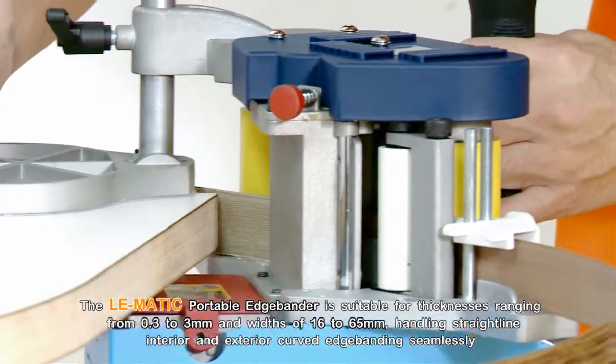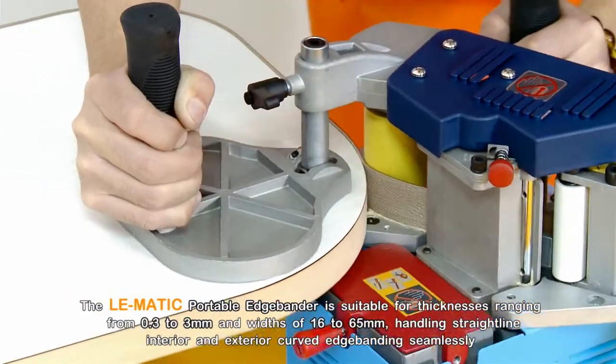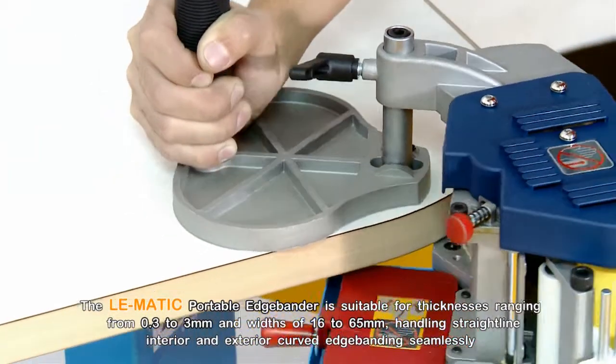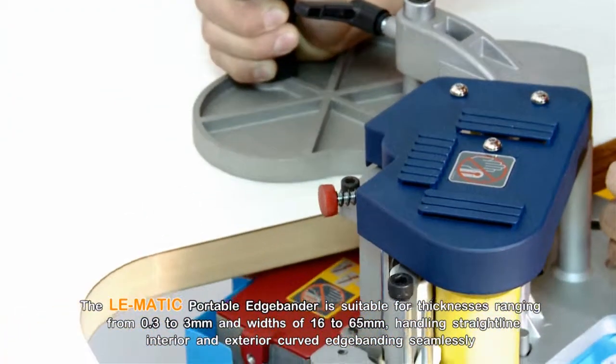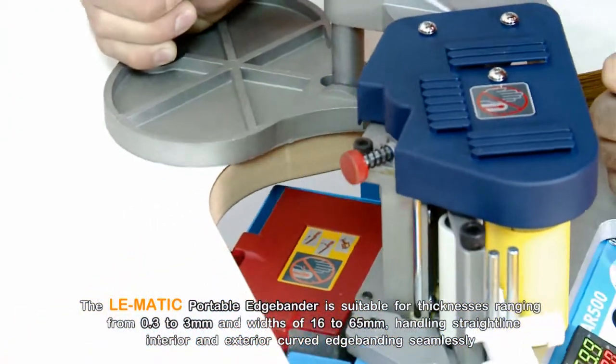The Lomatic Portable Edge Bander is suitable for thicknesses ranging from 0.3 to 3mm and widths of 16 to 65mm, handling straight line interior and exterior curved edge banding seamlessly.